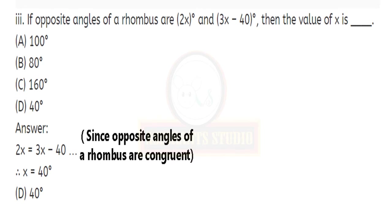Coming to the third one: if opposite angles of a rhombus are 2x degrees and 3x minus 40 degrees, then the value of x is dash. Since opposite angles of a rhombus are congruent, 2x equals 3x minus 40. Bring 2x to the right: 3x minus 2x gives x. Bring minus 40 to the left: x equals 40 degrees. The answer is D, which is 40 degrees.